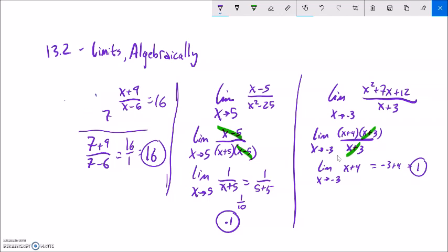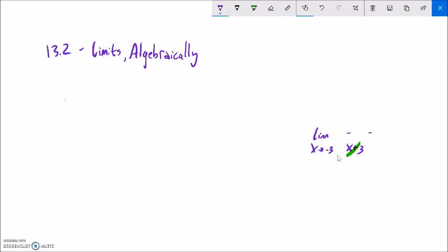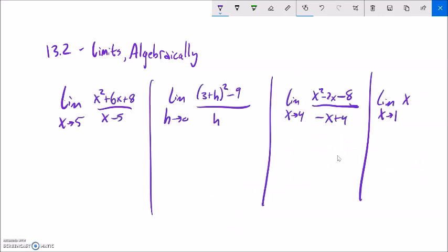All right. I have a few more examples for you. So this very first one, the limit as x approaches 5 of this thing over x minus 5. So I notice if I just try and plug it in, plug in 5, I'm going to be dividing by 0. So let me see if I can do anything with it. Limit as x approaches 5. x minus 5. This factors into a 4 and a 2. So x plus 4 times x plus 2. All right.